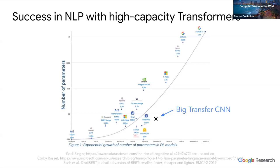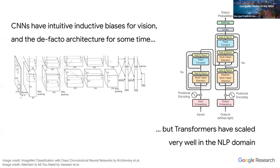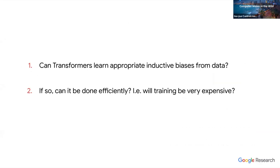These results motivated looking at the scale of pre-trained representation learning. The largest-scale networks to date have been trained in the language domain, and these are all transformers — which motivated looking at transformers for vision. The two main questions were: first, if you don't build inductive biases like shift equivariance and local features into the architecture, can models learn these directly from data? And second, even if it can be done, will it be very expensive to train, making it impractical?